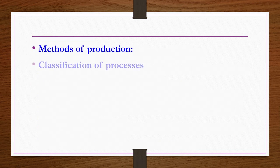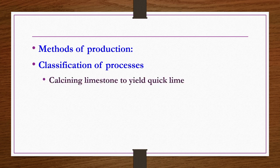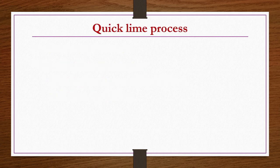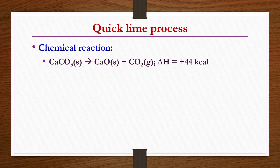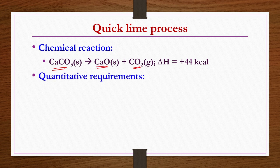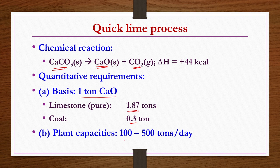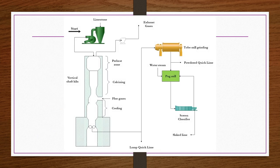Methods of production of lime: classification of processes includes calcining limestone to yield quick lime and then hydration of quick lime. Both can be studied in one single flow sheet. Quick lime process: the chemical reaction is that if you apply heat to calcium carbonate, you get calcium oxide by releasing carbon dioxide. Quantitative requirements: to produce 1 ton of calcium oxide, 1.87 tons of pure limestone is required, 0.3 tons of coal, and plant capacity varies between 100 and 500 tons per day. This flow chart covers both quick lime and slaked lime production.